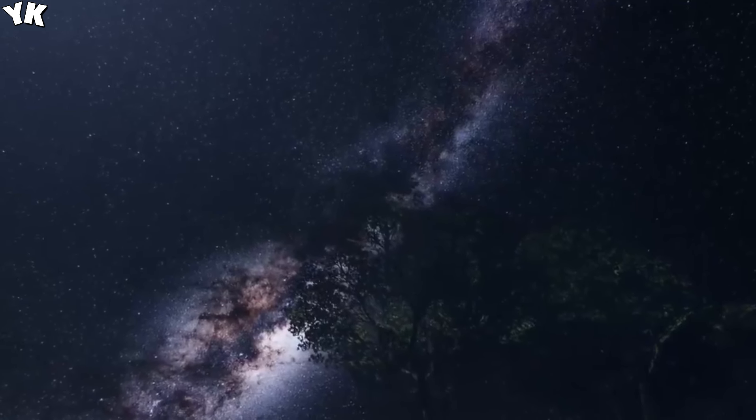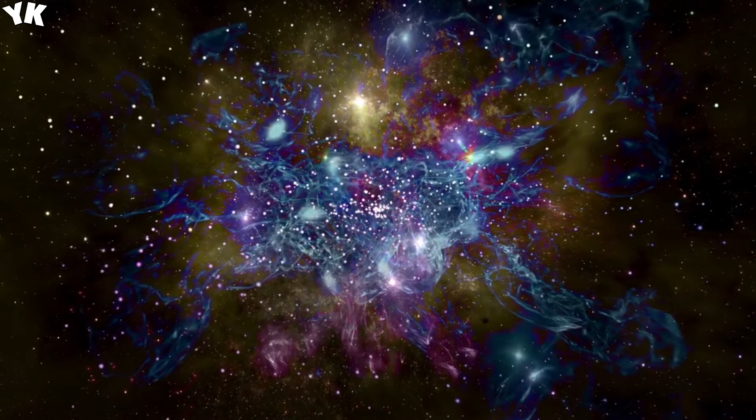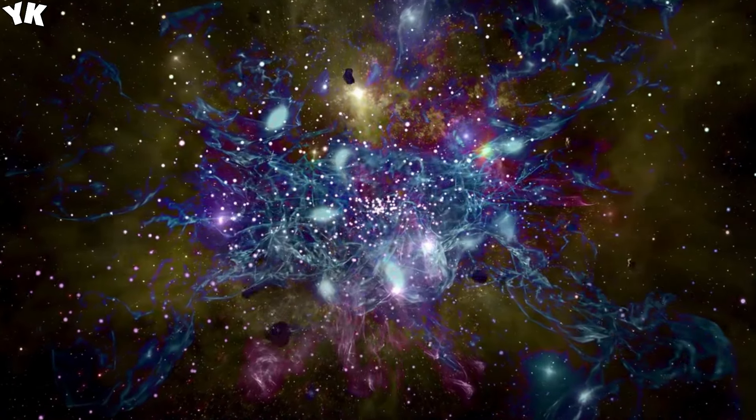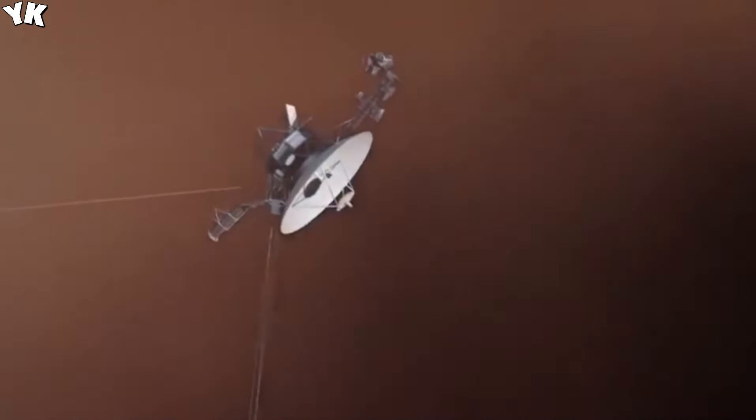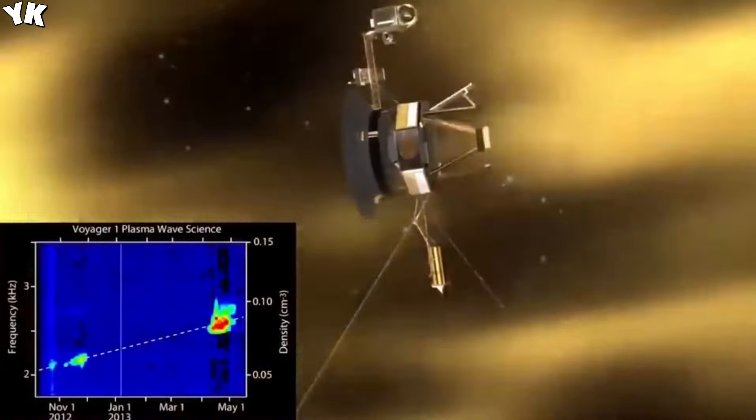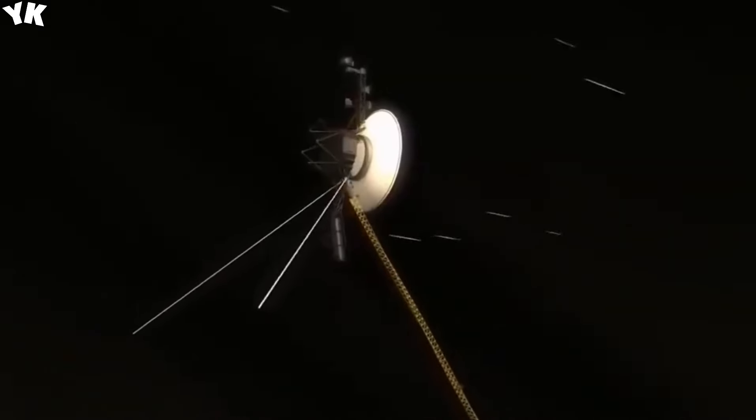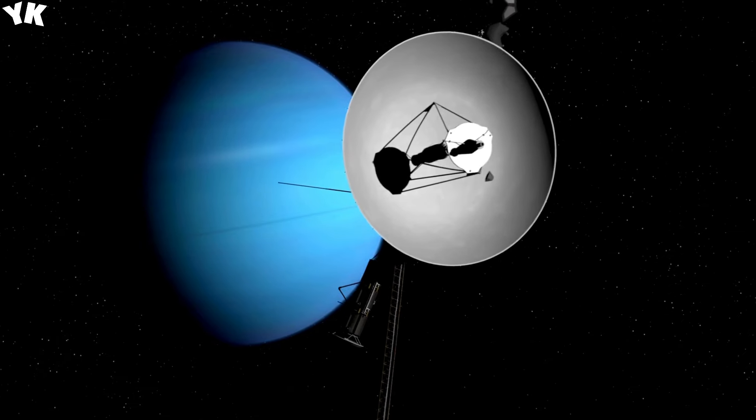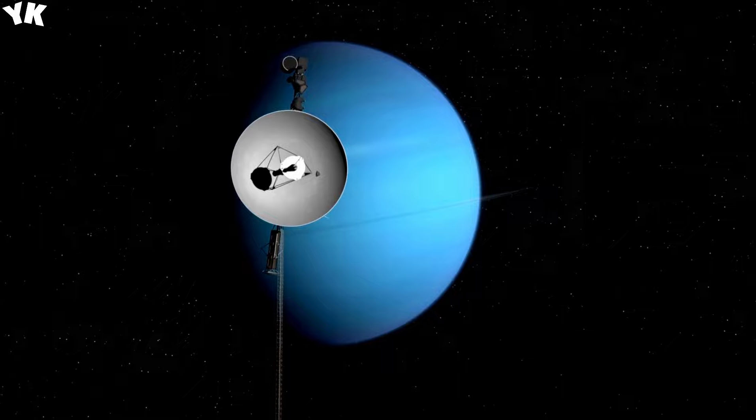The Voyager probes stand out for their meticulous design as stable platforms, featuring a rotation rate over 15 times slower than the hour hand of a clock. Engineered to minimize visual blurring while capturing images and data during their high-speed journey through space, their impressive imaging capabilities captivated scientists and the public alike. Even before reaching the outer planets, the Voyager spacecraft dazzled with their imaging prowess. Months prior to reaching Jupiter, they transmitted captivating images of the gas giant, showcasing swirling clouds and the iconic Great Red Spot.